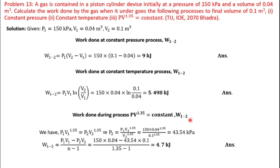For the polytropic process, the formula is W = (P1*V1 - P2*V2) / (n - 1). Using the polytropic law, P1*V1^1.35 = P2*V2^1.35, we can find the final pressure. With n = 1.35 given, the work done comes out to 4.7 kJ.